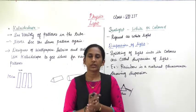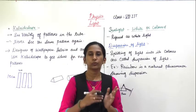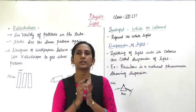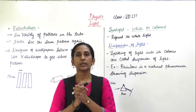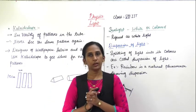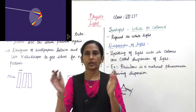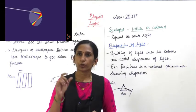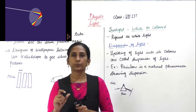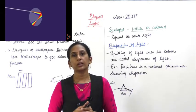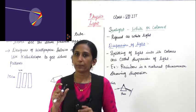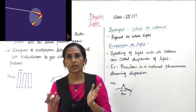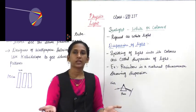Now you might think: where is the prism in a rainbow? During the rainy season, after a rain shower, the water droplets act as a prism. When the sunlight falls on the droplet, there is a reflection that takes place and it gives the seven colors.